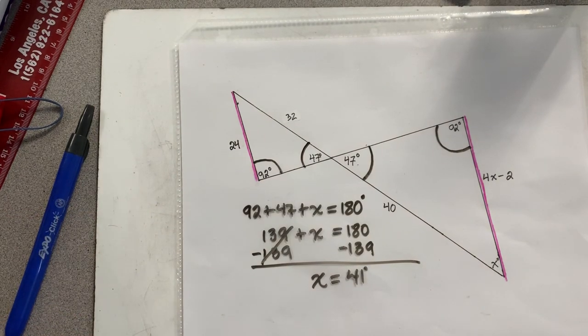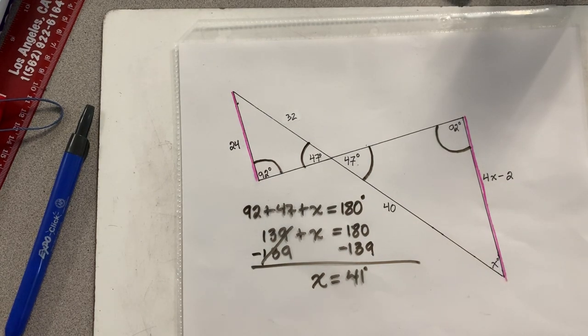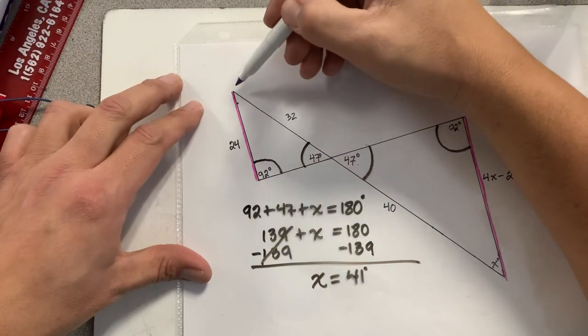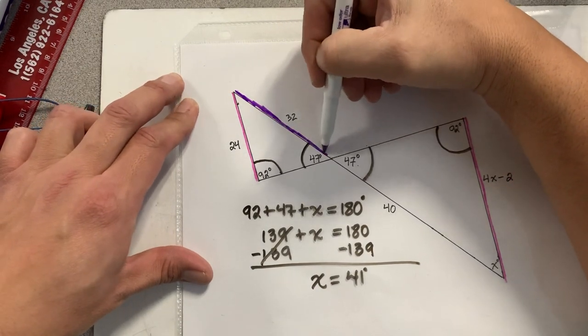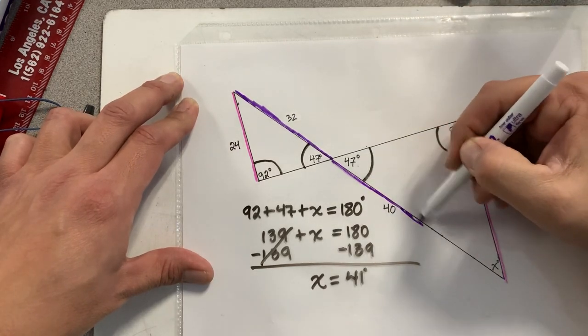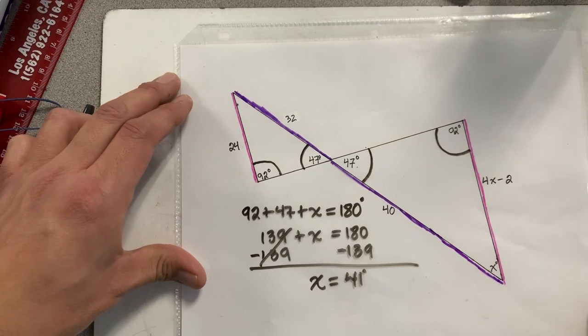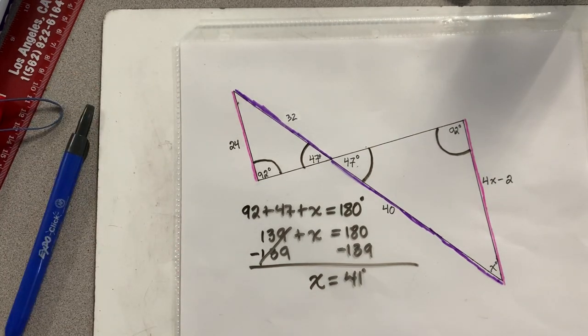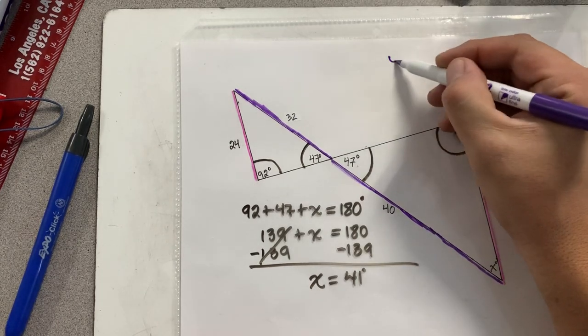But to figure out the scale factor, I need sides that have actual numbers and not variables, right? So I'm going to use 32 and 40, because 32 corresponds to 40.